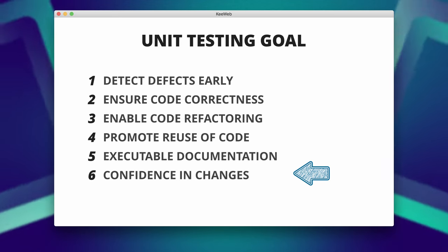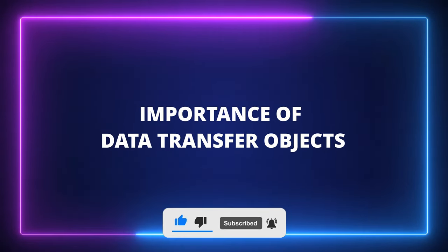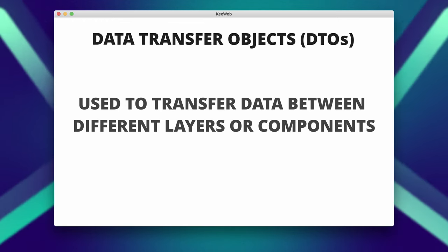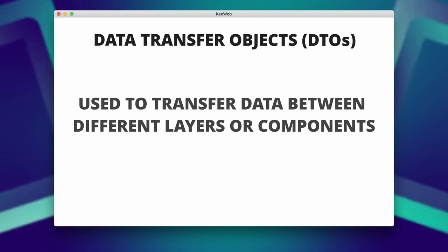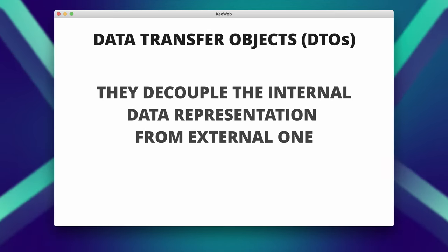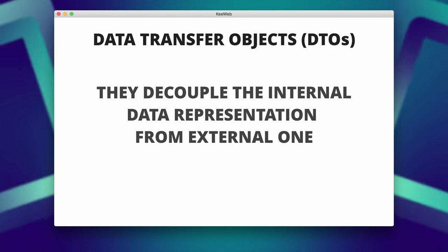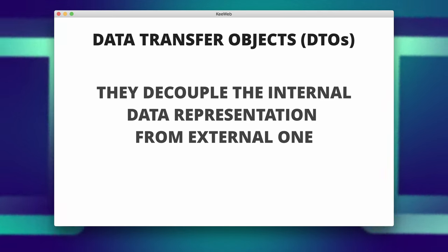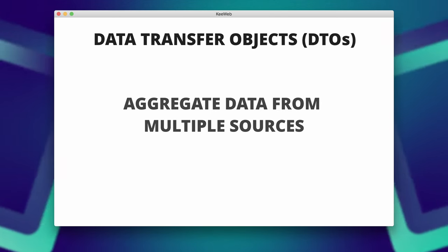What is the importance of data transfer objects? Data transfer objects (DTOs) are objects used to transfer data between different layers or components of an application. They are typically used in software architectures where data needs to be transferred between remote systems, across network boundaries, or between different layers such as the presentation layer, business layer, and data access layer. The main purpose of using DTOs is to decouple the internal representation of data from its external representation. They help reduce the amount of data sent over the network by including only necessary fields, and can also aggregate data from multiple sources or transform data into a format suitable for the receiving component.